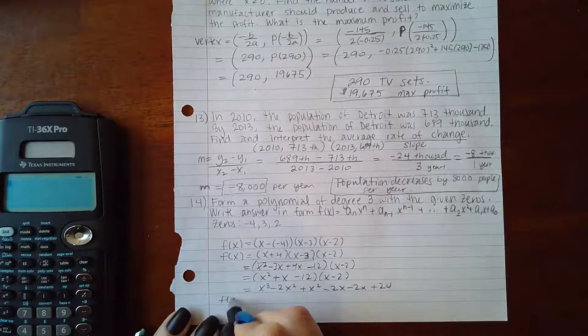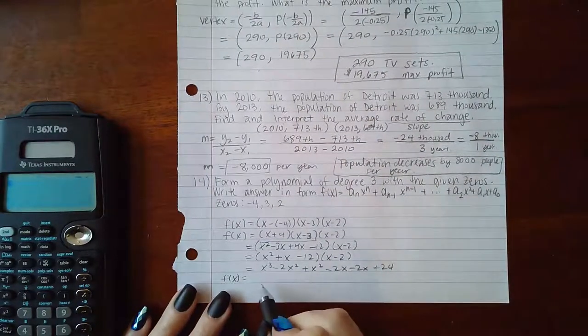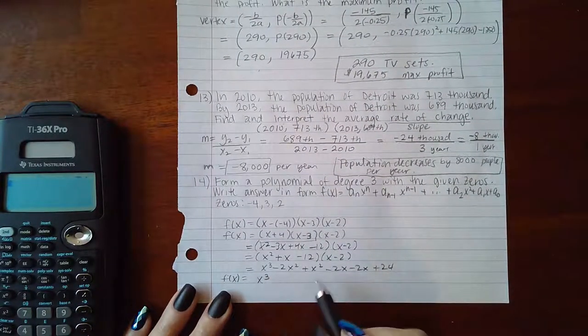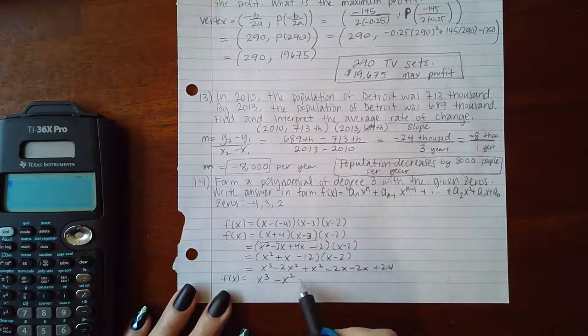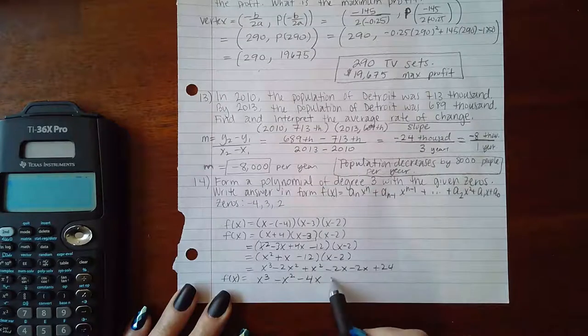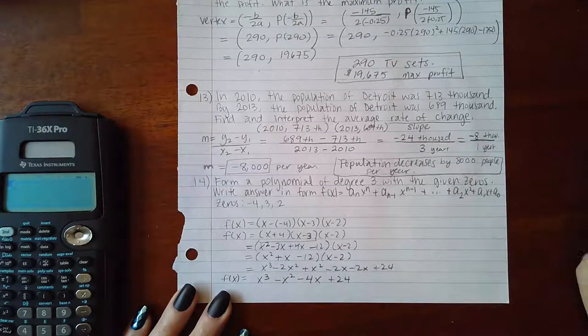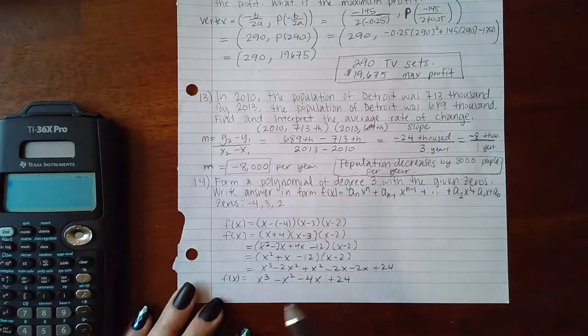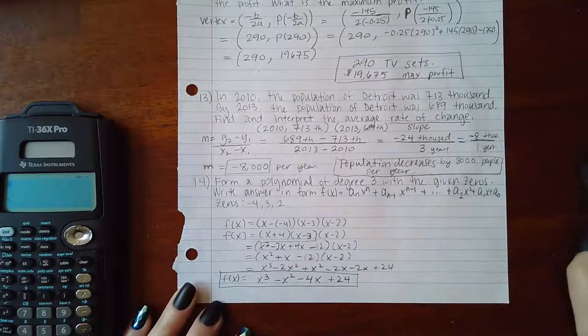Combining like terms gives the final answer. I get x³, these terms together make negative x², these make negative 14x, and positive 24. This is the expanded version of the function: x³ - x² - 14x + 24.